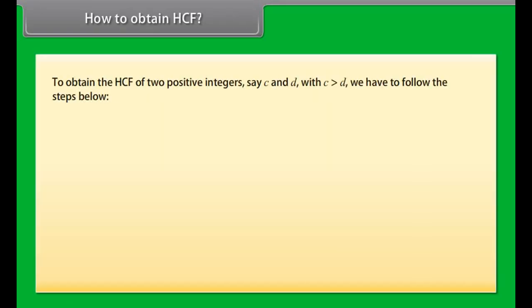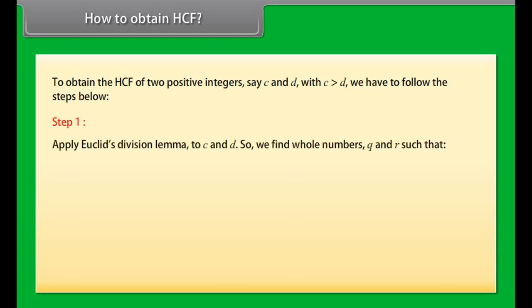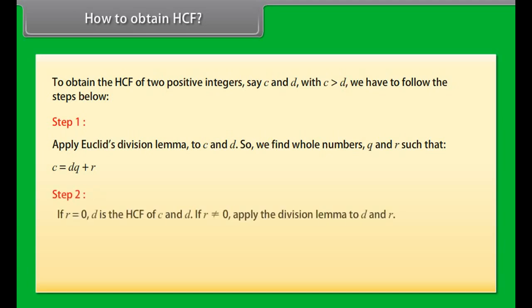To obtain the HCF of two positive integers c and d, with c greater than d, follow these steps. Step 1: Apply Euclid's division lemma to c and d to find whole numbers q and r such that c = dq + r. Step 2: If r = 0, then d is the HCF. If r ≠ 0, apply the division lemma to d and r. Step 3: Continue until the remainder is 0; the divisor at that stage is the required HCF.